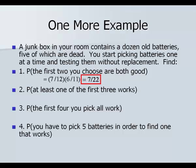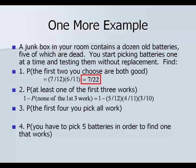Number two: find the probability that at least one of the first three works. This is an 'at least' problem — go backwards and do 1 minus the opposite, which is that none of the first three work. So 1 minus (5/12 × 4/11 × 3/10): the first is not working, the second is not working, the third is not working. We subtract one bad battery and one total each time since we're not replacing them. You should end up with 21 over 22.